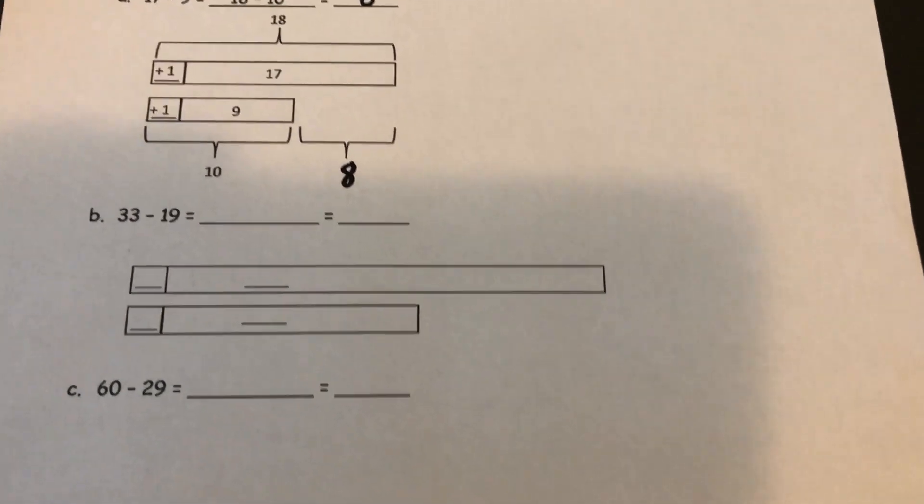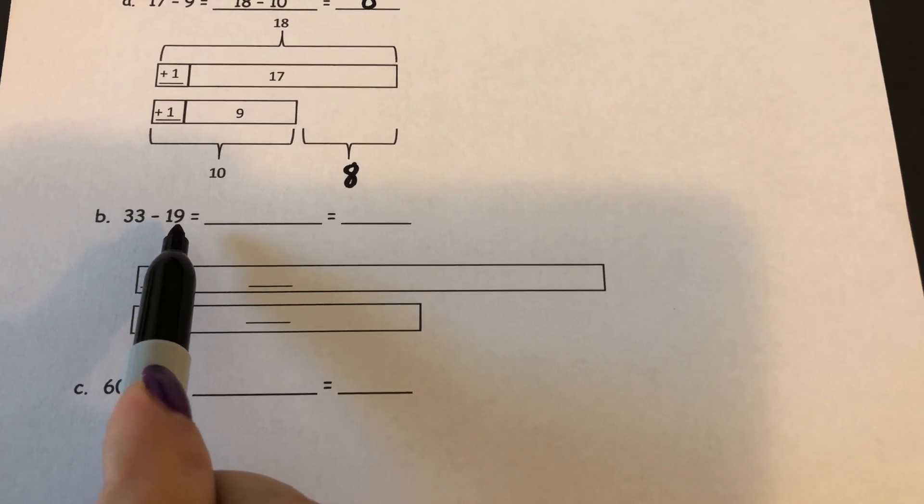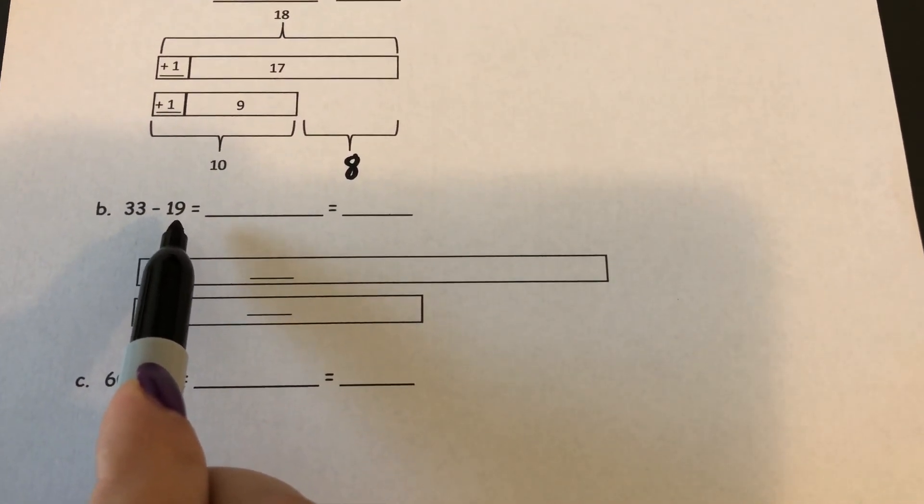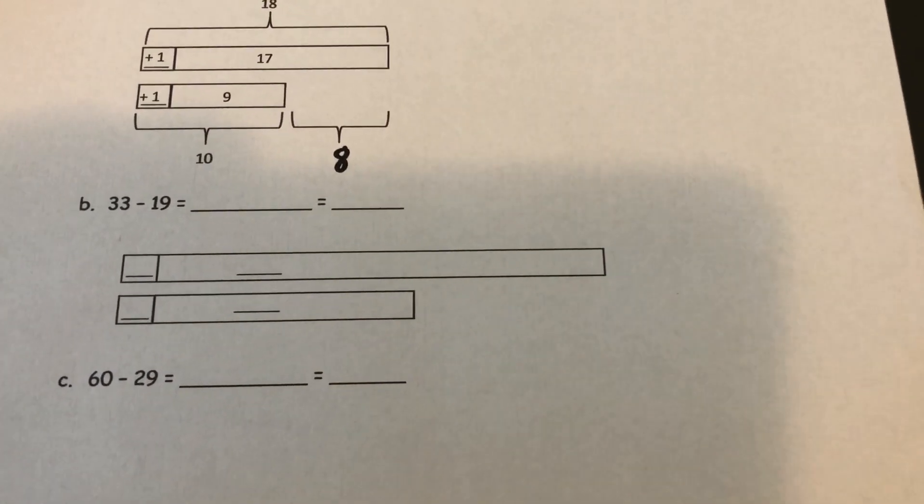Let's look at a different one so we can do it together. 33 minus 19. Well, if I go to subtract like units, I would have three 1s and I need to take away 9 ones. I can't do that without decomposing a 10, so we're going to try this new strategy.